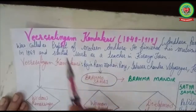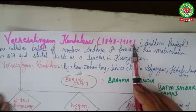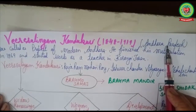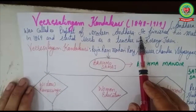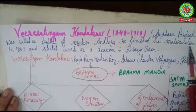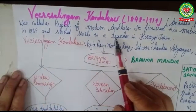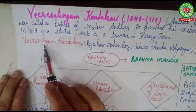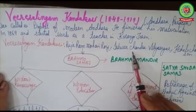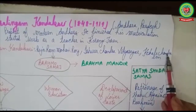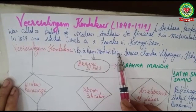Now we will discuss the contribution of Varisalingam Kandukuri. He was born in 1848 and died in 1919. He started the reform movement in Andhra Pradesh and was called the 'Prophet of Modern Andhra.' He finished his matriculation — the 10th standard examination — in 1869 and started working as a teacher in Korangi town.